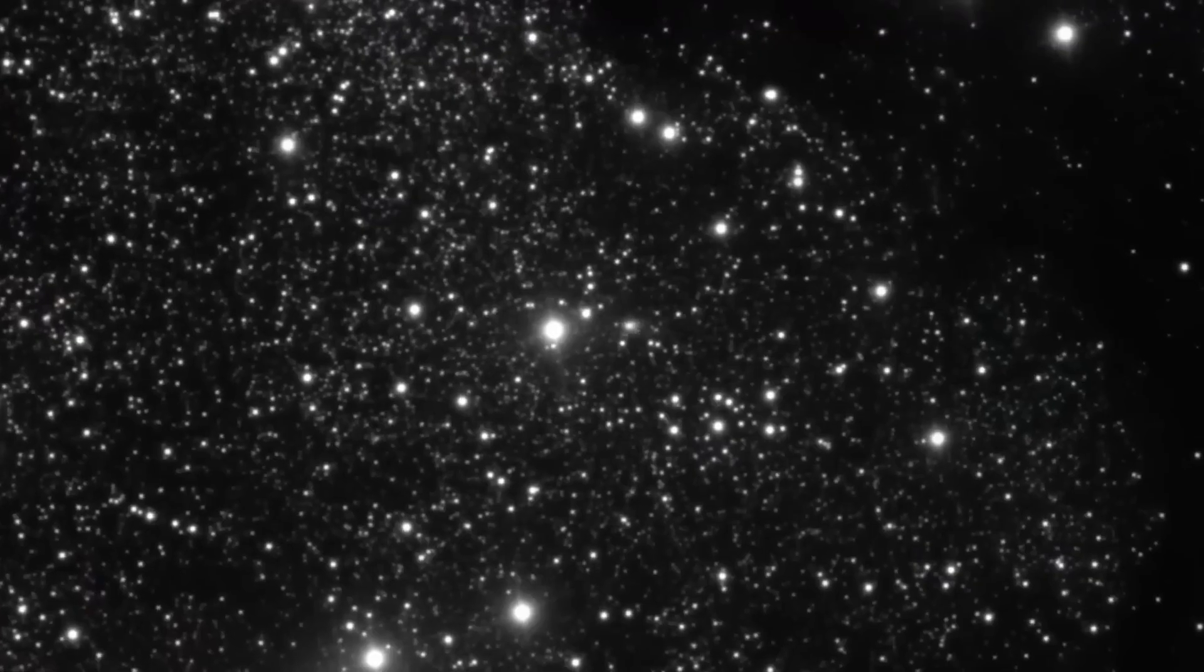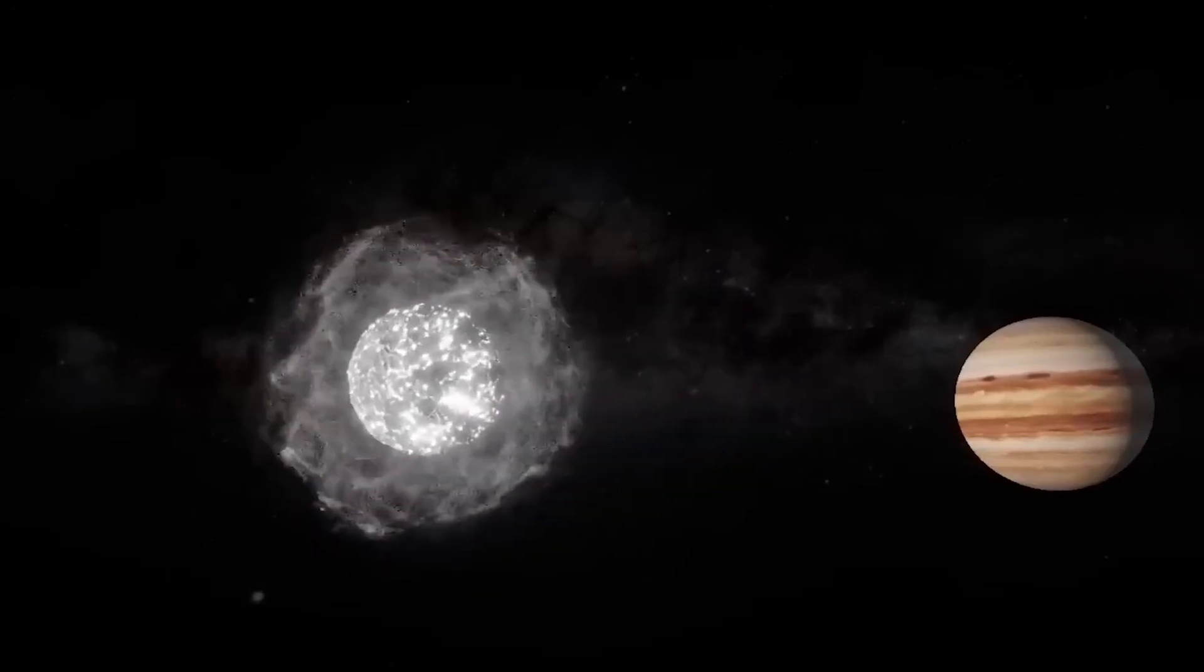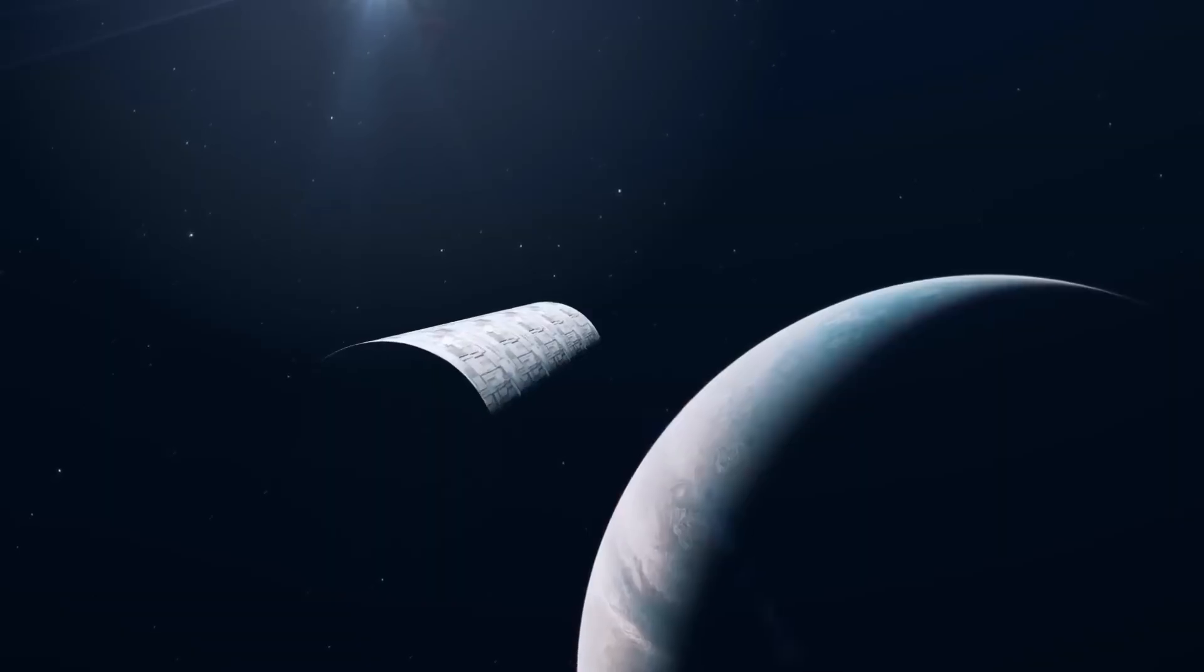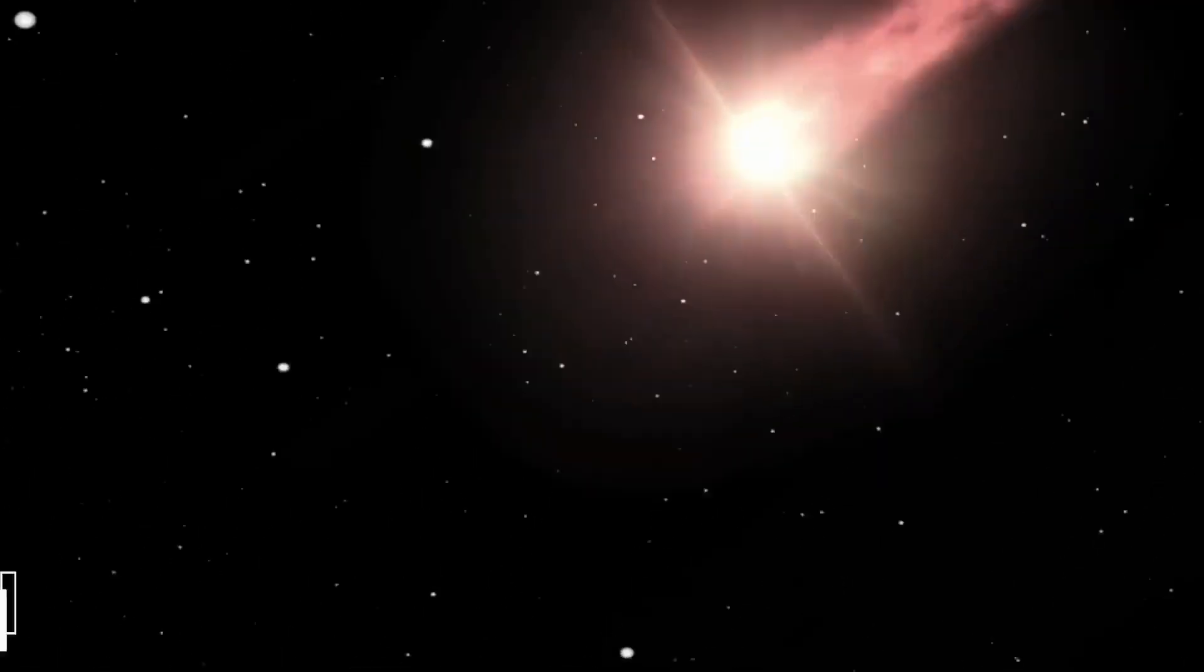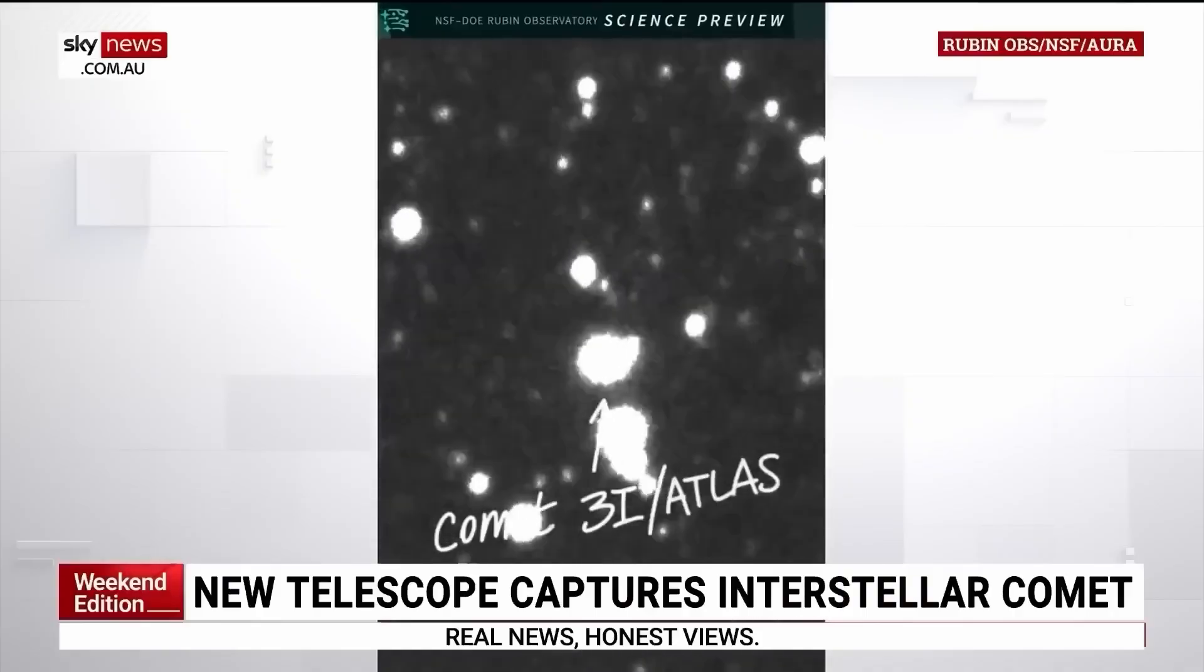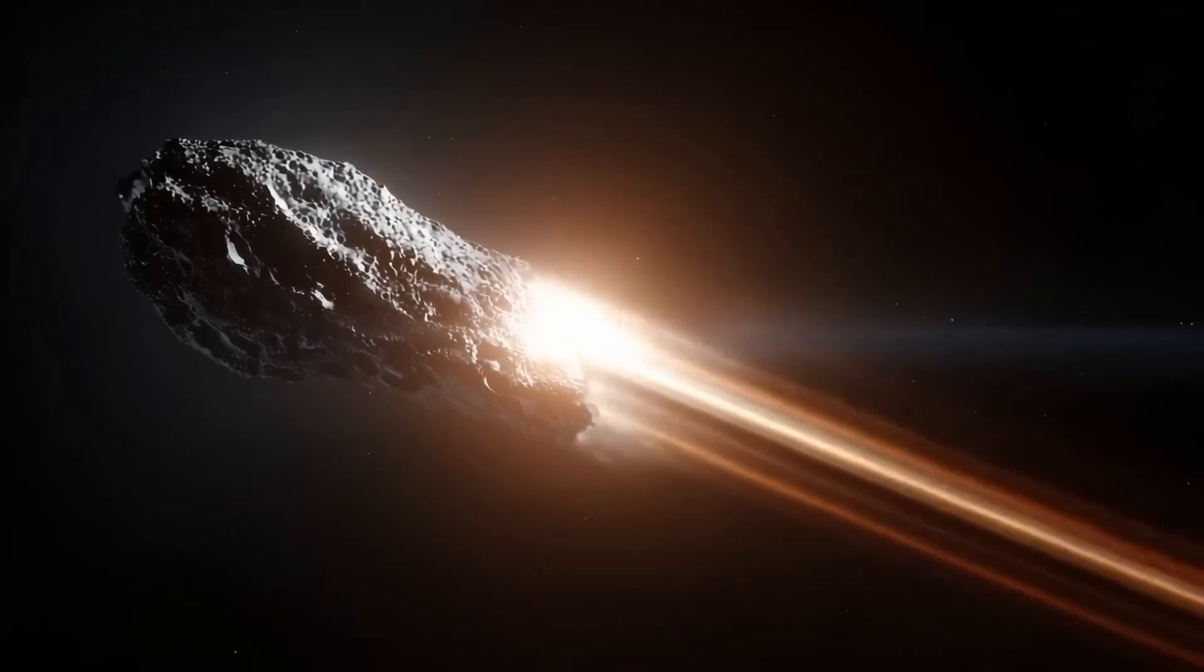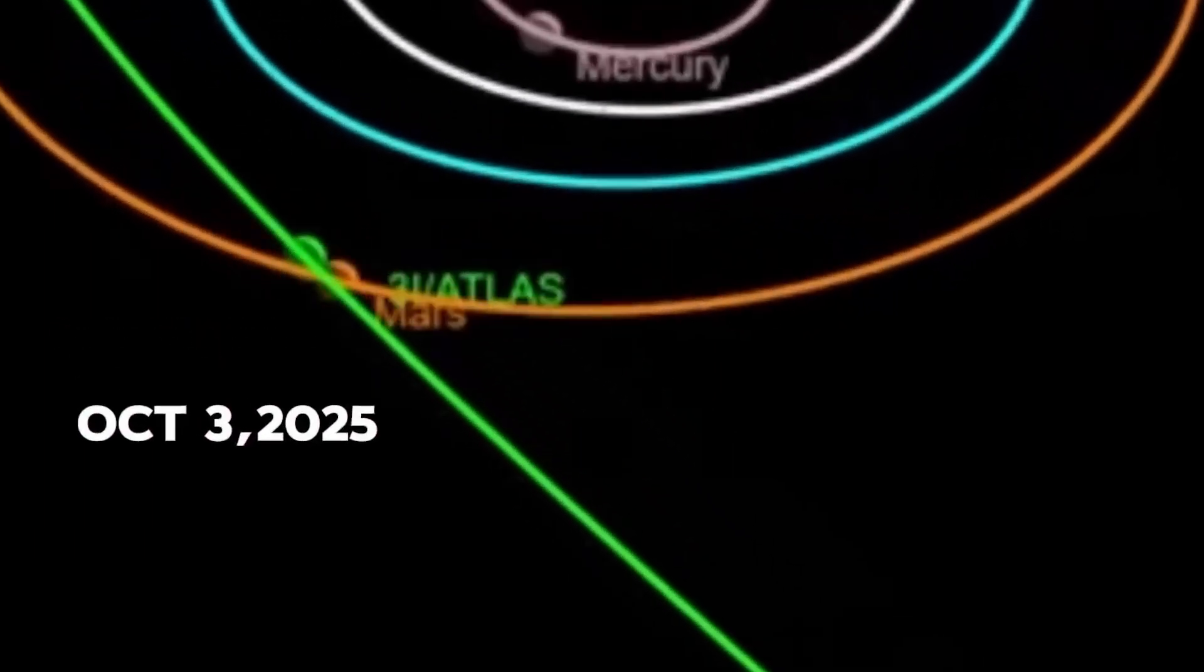Many were ready to label it a comet, shrug at the odds, and move on. But then came another discovery that kept the story alive. It wasn't just the orbit that stood out. The object's glow didn't behave as expected. Comets reflect sunlight in a way that tells you their size and composition. With 3i Atlas, those numbers didn't agree. Its brightness was out of proportion to the dimensions inferred from its motion. The pattern of its light refused to match the usual flickering of dust and ice.